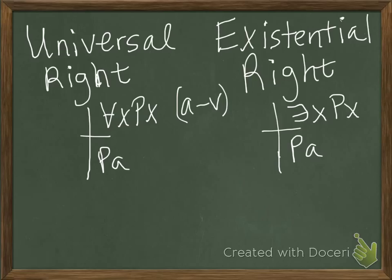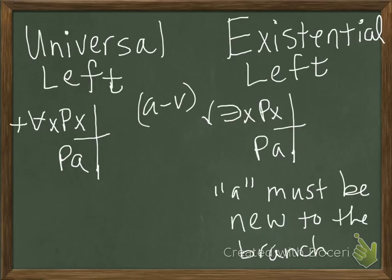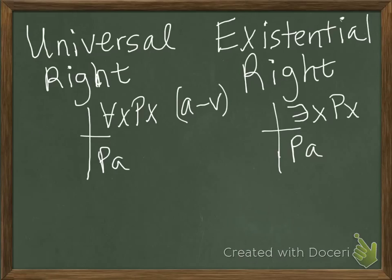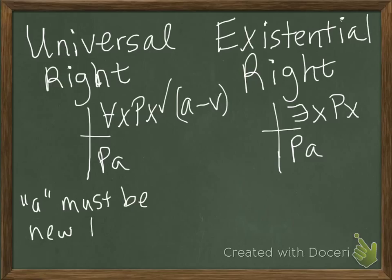However, the right-hand rules are the opposite of the left-hand rules in terms of which one has the restriction. On the left-hand side, the existential has the restriction and we give that a checkmark. On the right-hand side, the universal has the restriction that a must be new to the branch. The existential on the right we can do as many times as we like.